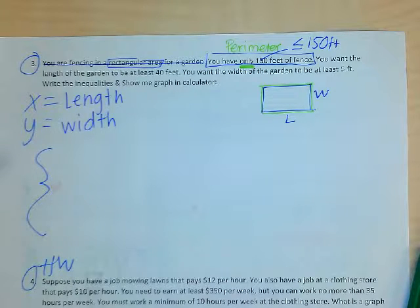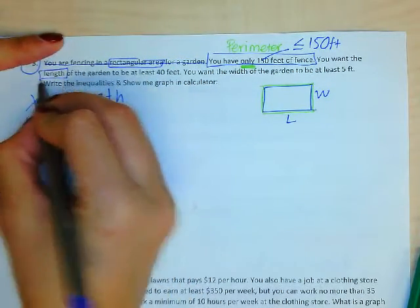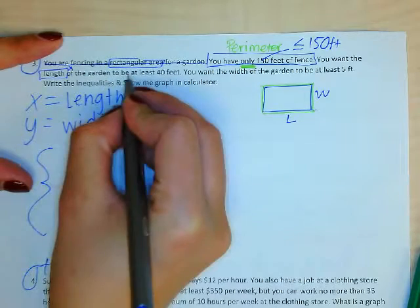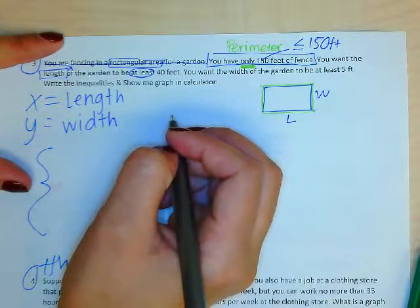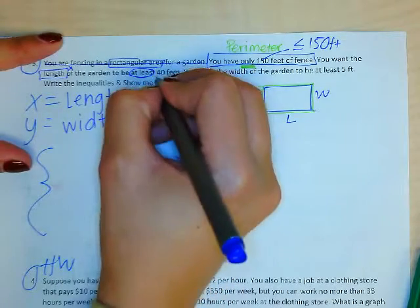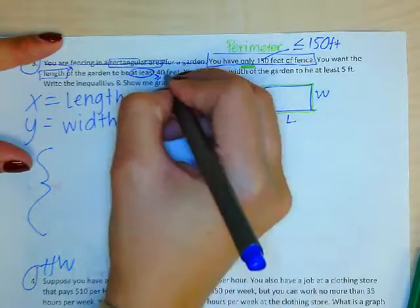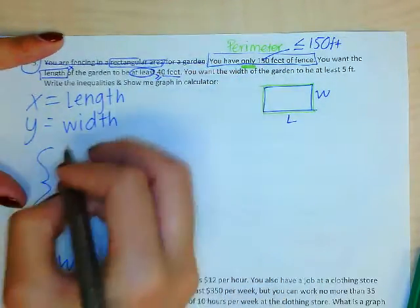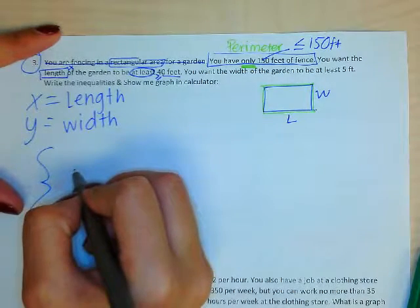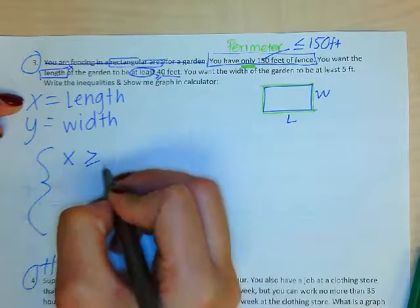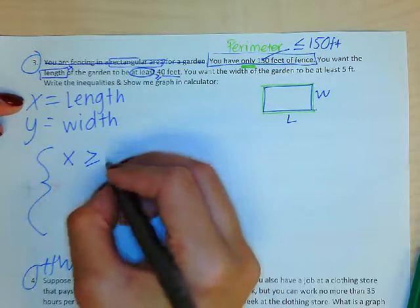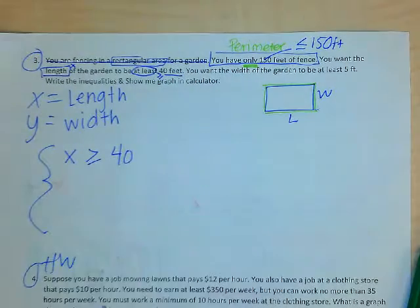Then it says you want the length of the garden to be at least 40 feet. So here is my variable length, which was x. My keyword is at least. Remember, at least means that or more. It's a minimum. So my sign would be this and then 40 feet. Okay? So now I have my first inequality from that sentence. Length, which is x, has to be at least. That means that or greater than 40 feet.